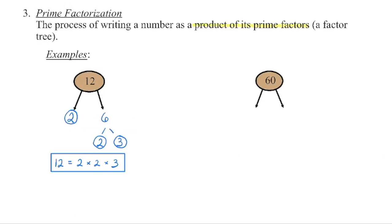Every number can be written as a product of its prime numbers. For example, 2 times 2 times 3 — all prime — multiplied together give me 12.